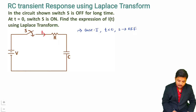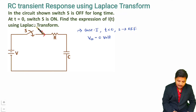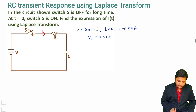As the switch is off for t less than 0, we don't have any charge inside the capacitor. So the voltage across the capacitor will be 0 initially. At time t equals 0, this switch is getting on, and I will explain how to convert this circuit into the Laplace domain.